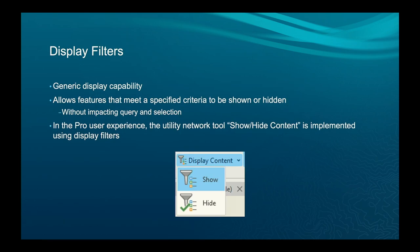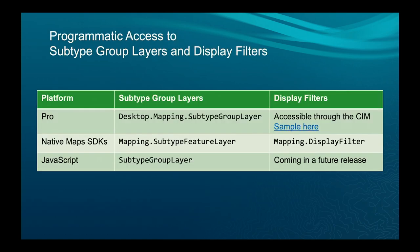Display filters, from a UN context, allow you to show and hide features while keeping them selectable but not visible. That's what we use to implement the show-hide containment option in ArcGIS Pro. Programmatically, we have full support for most of these things. The exception is the JavaScript API doesn't yet support display filters, and to get to display filters through Pro you have to go through what's called the SIM model.